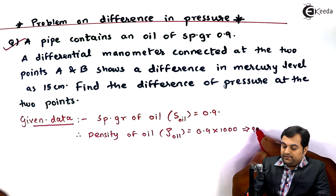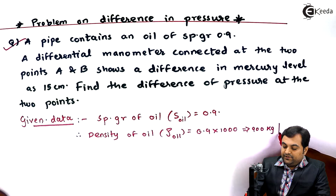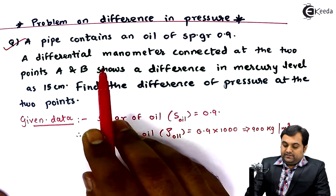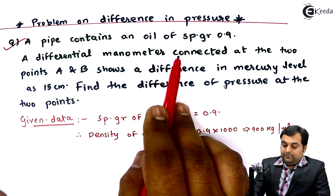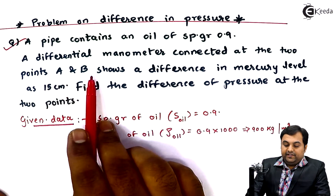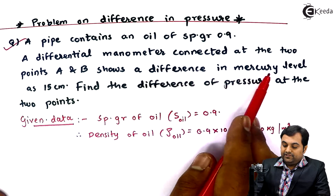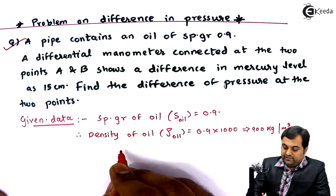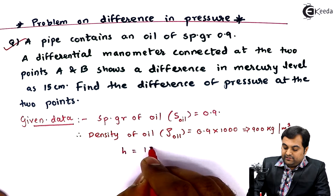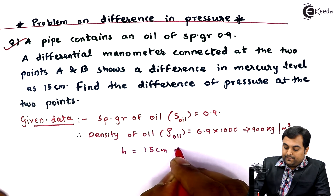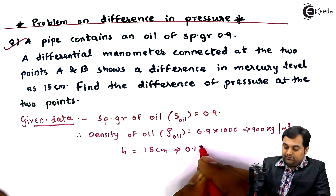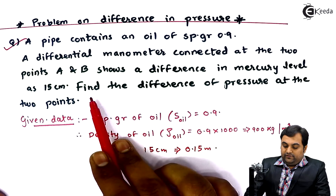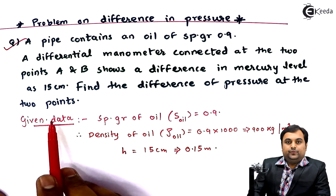Therefore, density of oil is 900 kg/m³. Next, the differential manometer connected at two points A and B shows a difference in mercury level of 15 centimeters. This difference in mercury level is H, which equals 0.15 meters.